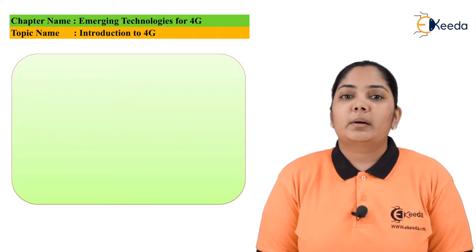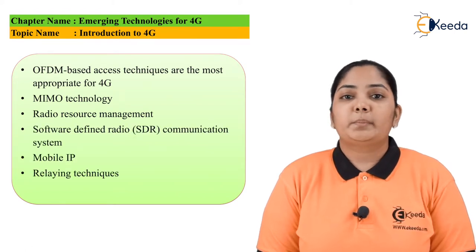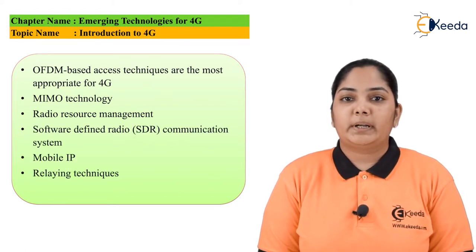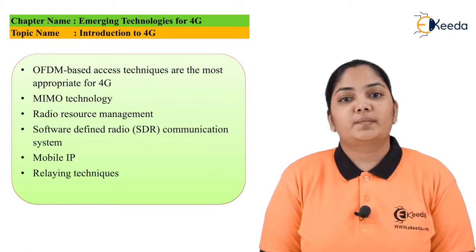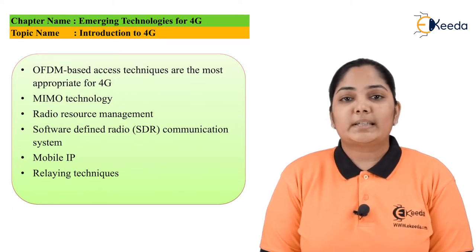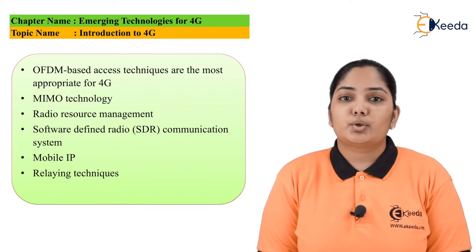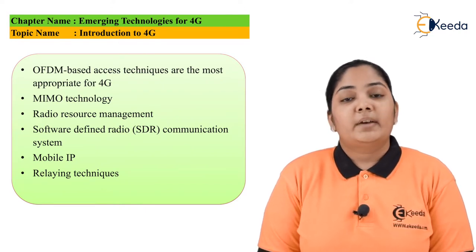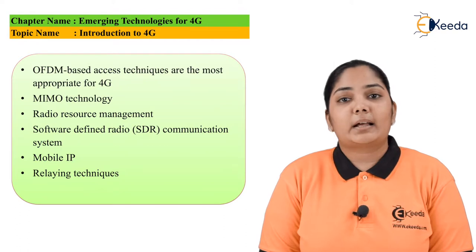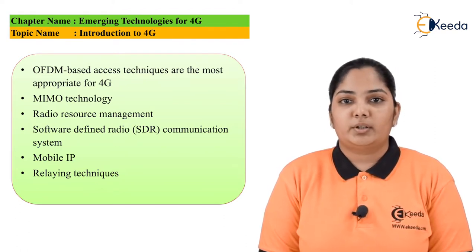Next we come to the ingredients of the 4G system. OFDM is considered to be the most appropriate technology for transmission. OFDM stands for Orthogonal Frequency Division Multiplexing. This technique is also used as a modulation technique where we have multiple carriers that transmit the data. OFDM is considered one of the very important technologies for transmission as well as modulation in 4G.